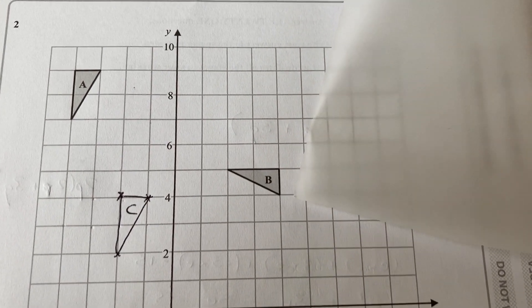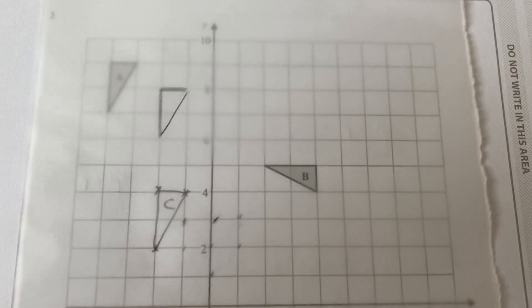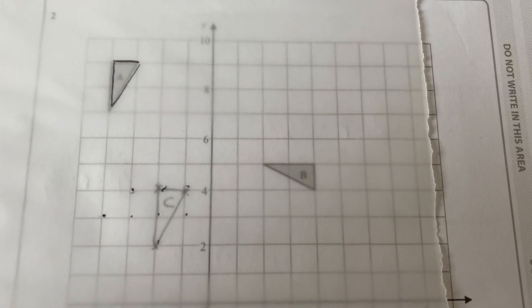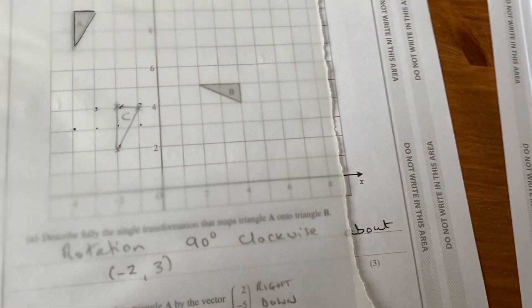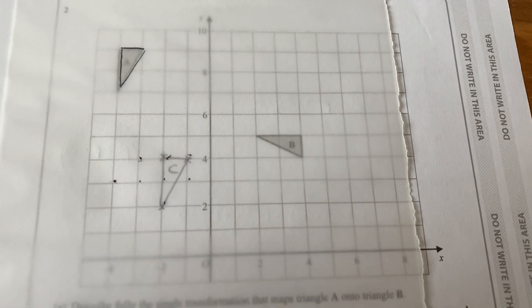So at this stage, bring in our piece of tracing paper, trace shape A, and then try and find out by holding a place on the paper where this correct rotation point is.